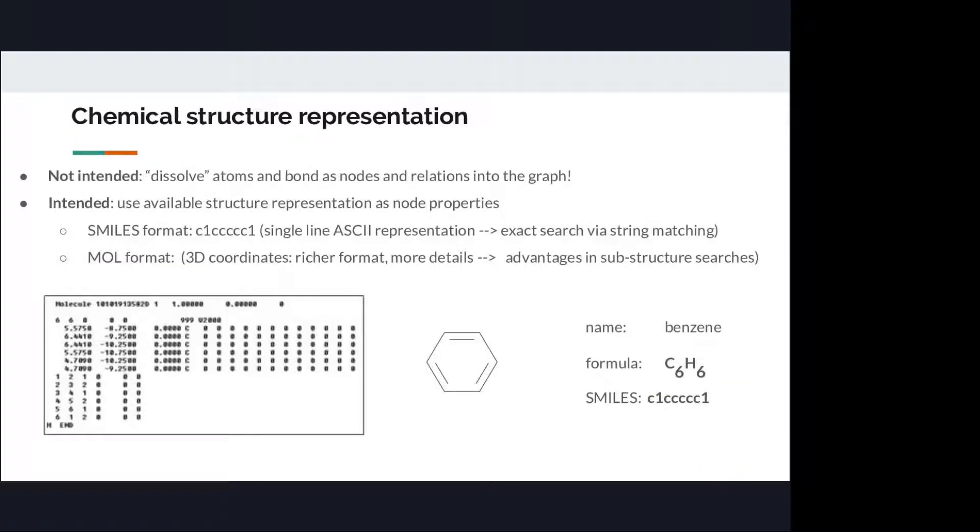Chemical structure representation. One important point: we are not interested in dissolving atoms and bonds as nodes and relations in the graph. We wish to use available structure representations as node properties. For example, there are two main approaches: Smiles format and Mold format. Smiles format is basically a two-dimensional representation of your molecule. It will be used in exact search.